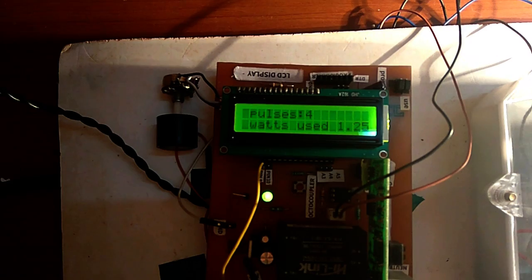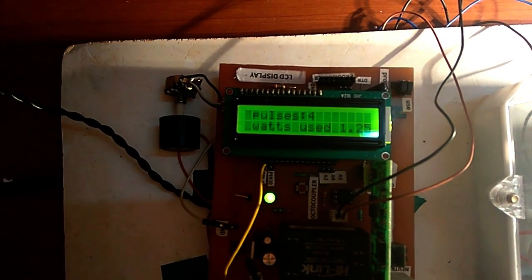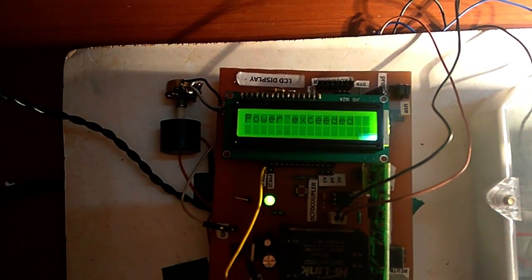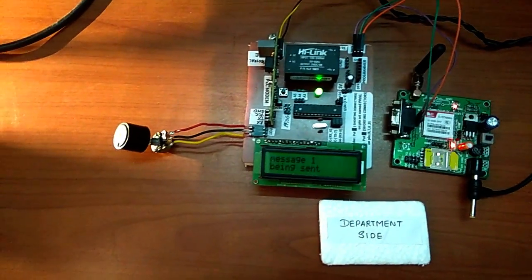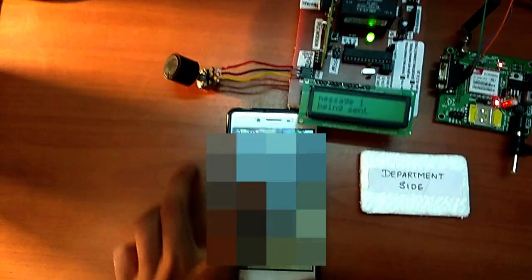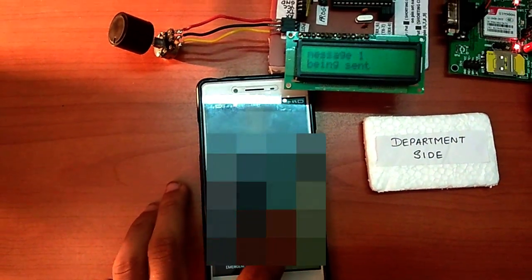When the watts used exceeds 1.5 watts, a message is sent to the microcontroller at the distribution transformer through powerline modem, saying that house A has exceeded the power usage limit, and the microcontroller will start again to count the pulses.